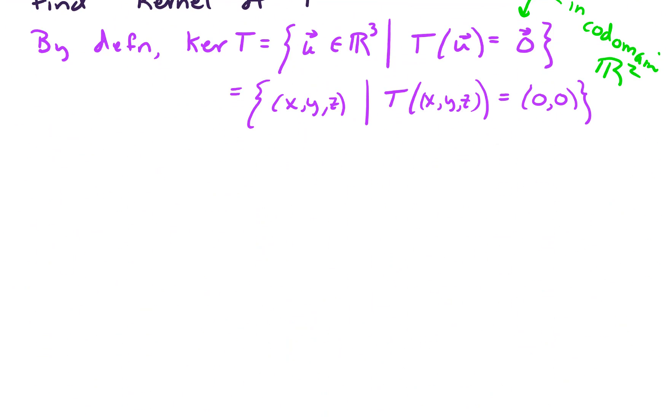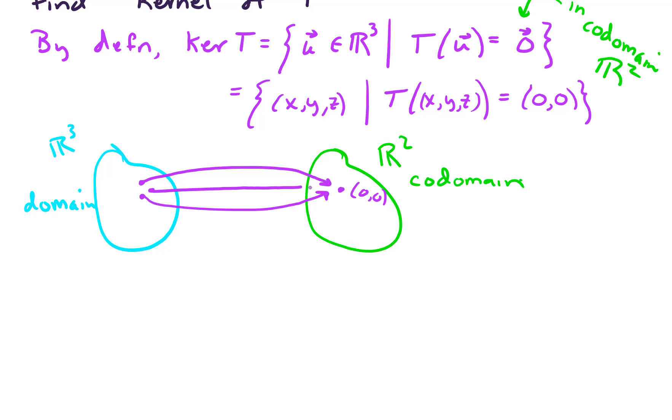A picture of what we're looking for is something like the following. Here's our domain set R³, this is our domain. And our codomain lives over here, that was R² for this particular example. And what T does is T is a rule that assigns vectors in R³ to vectors in R². So we're looking for the vectors that map to the zero vector over here in R². We're looking for all the little vectors that map to zero. And certainly not every vector maps to the zero vector, but there's some that do. This set that maps to the zero vector, that's called the kernel of T.